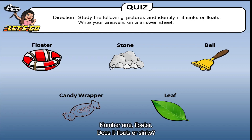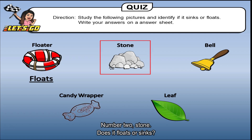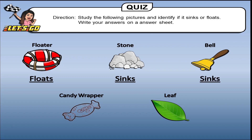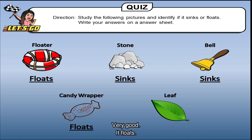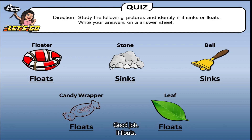Okay, time's up. Number one — does it float or sink? Very good, it floats. Number two — stone. Does it float or sink? Good job, it sinks. Number three — bell. Does it float or sink? Good, it sinks. And last number — number five. Does it float or sink? Good job, it floats. Very good!